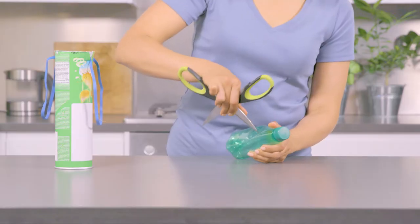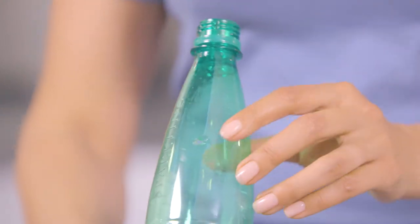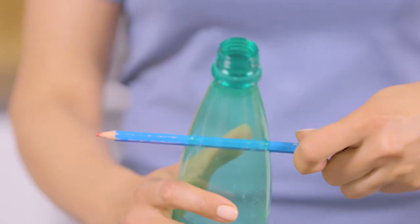Pierce two opposite holes in the bottle about a third of the way down. Insert a pencil through these holes.